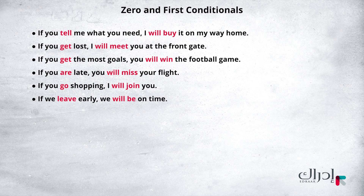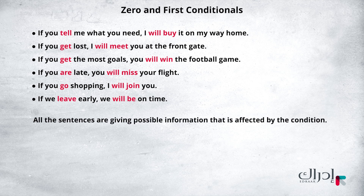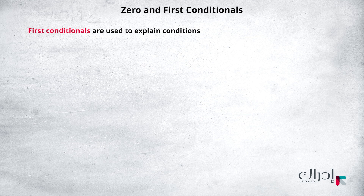What do you notice about these sentences? What type of information do they give? That's correct. All the sentences are giving possible information that is affected by the condition. Can you think of a few more conditional sentences? What do you notice about the verbs in bold? How are they different? Yes, one of them is in the present tense and the other is in the simple future. That is the first conditional, since it describes situations that are highly possible. First conditionals are used to explain conditions that have a high possibility of happening in the future — it's not 100% sure, it's a likely thing.